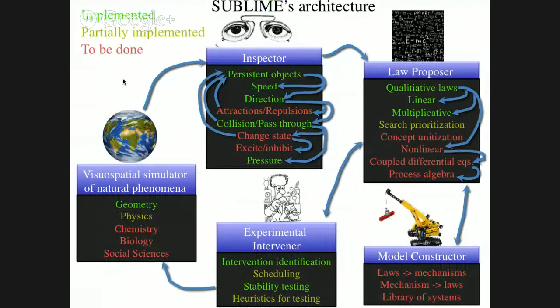The entire system is quite elaborate. Part of it is partially implemented — those are the green components. Yellow is in between, and red components haven't been implemented yet. Focusing on the inspector: it looks at the actual world and the first thing it has to do is figure out persistent objects. It doesn't have a notion of an object across movie frames — it first has to solve the object correspondence problem, framed by Shimon Ullman, to figure out that this is the same object in frame 1 as in frame 2.